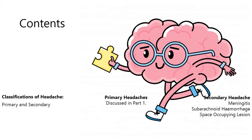In part one I went over some primary headaches, and if you haven't watched that yet it's worth going back to part one and taking a look. I defined the differences between primary and secondary headaches: primary headache is a headache in the absence of a significant underlying pathology. Contrasting to that, secondary headaches are essentially red flag headaches where there is the presence of some serious underlying pathophysiology.